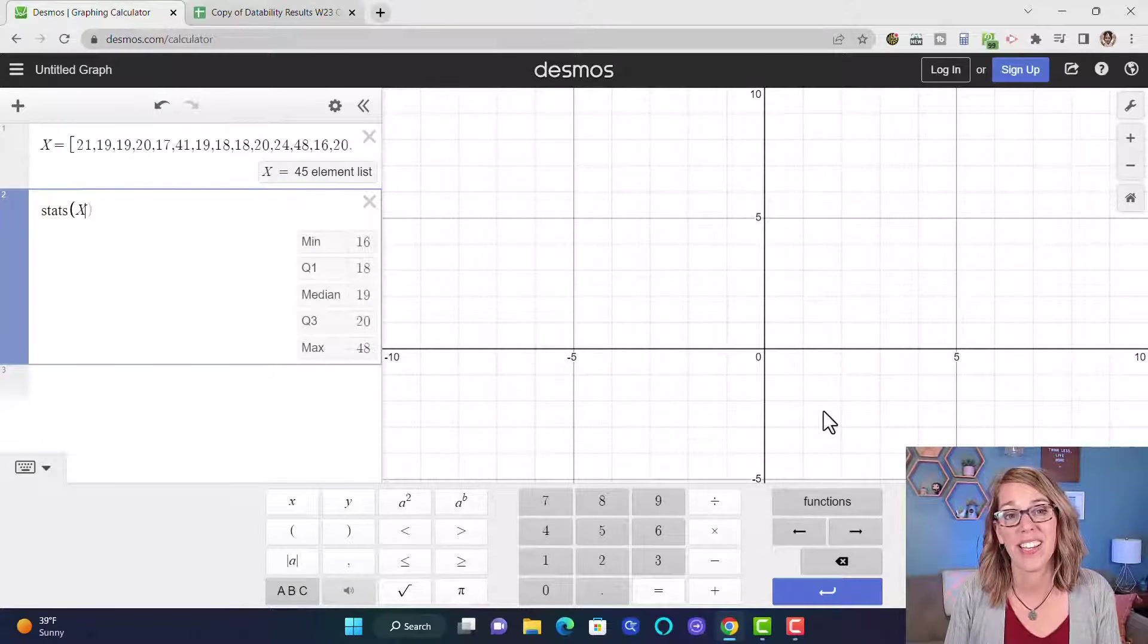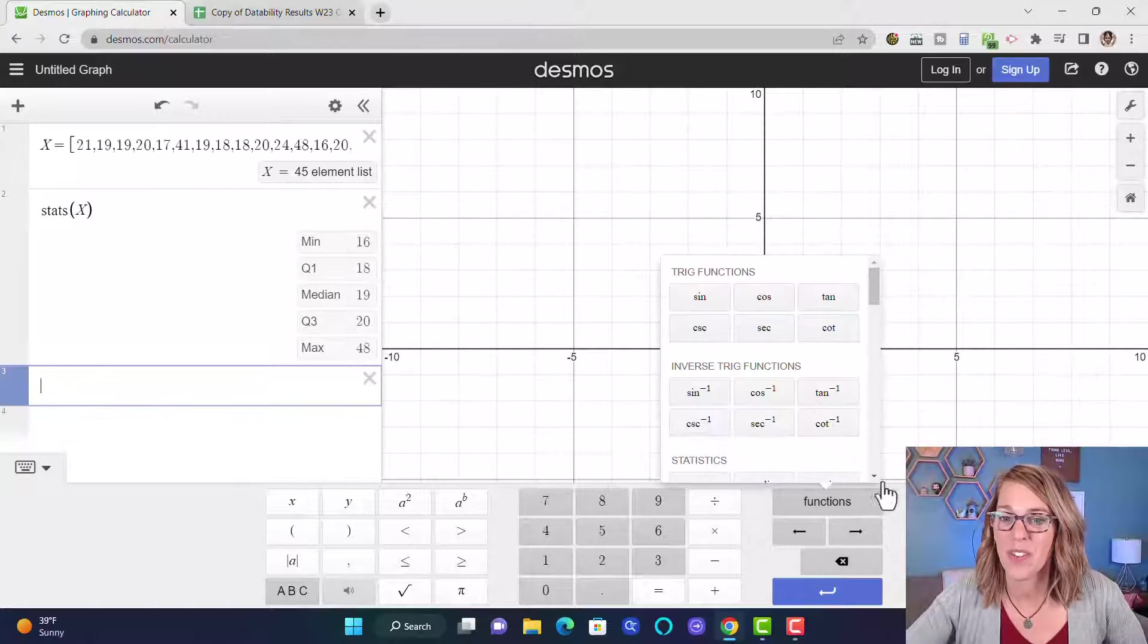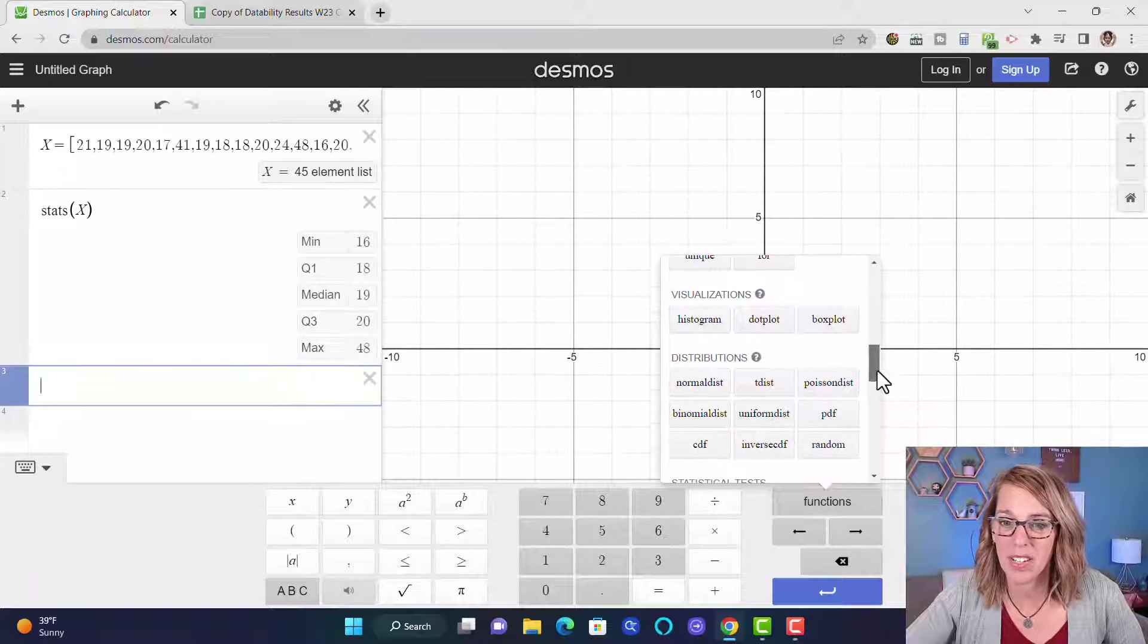If I wanted to visualize this with a box plot I can go into another empty cell, over to functions, or you could type in box plot, but I'm going to go ahead and grab it under visualizations here.